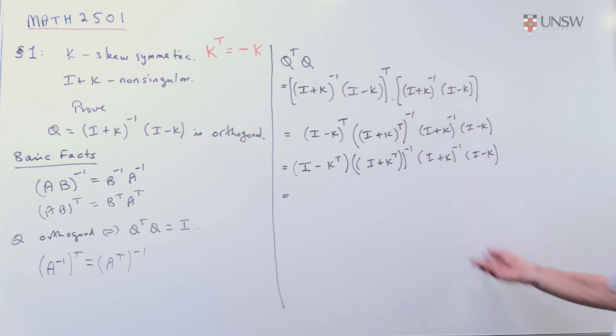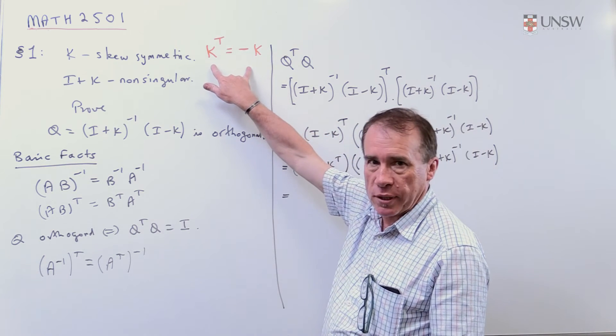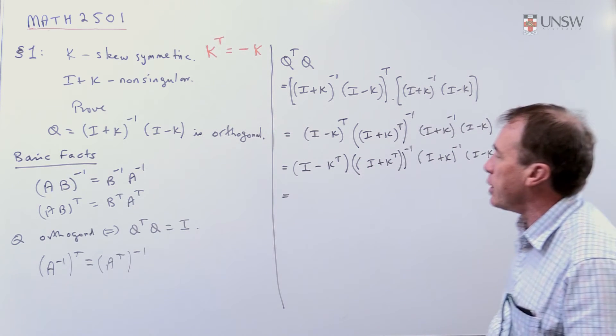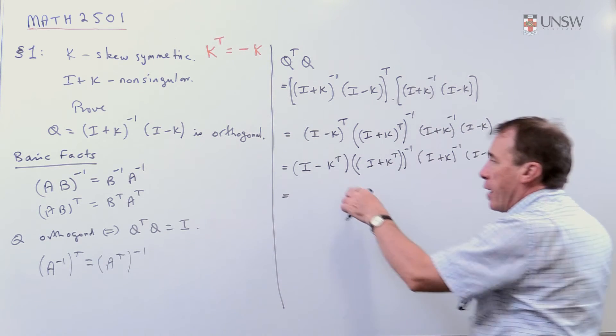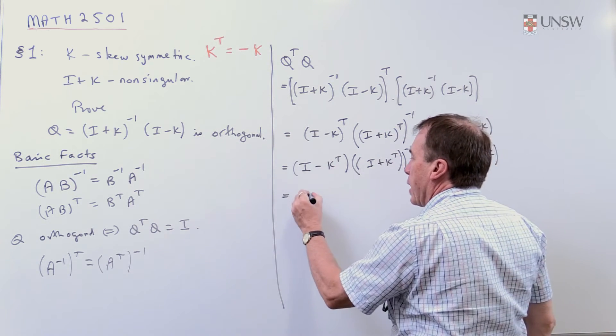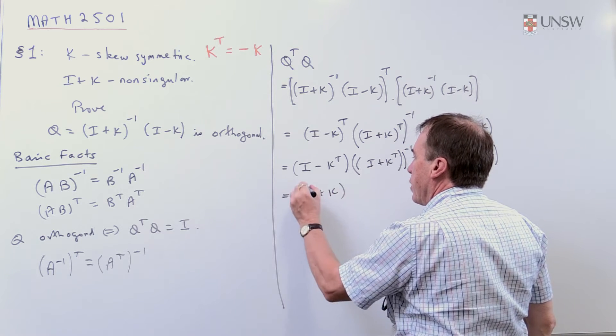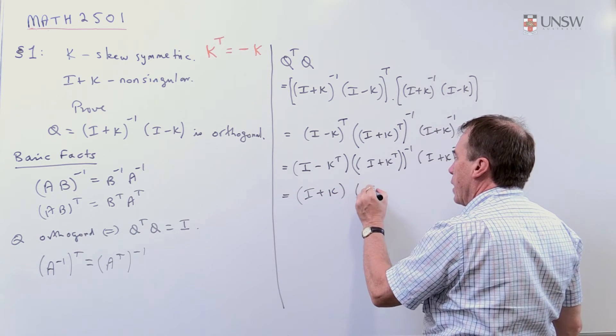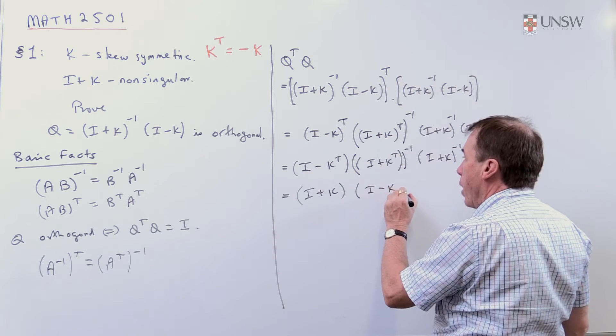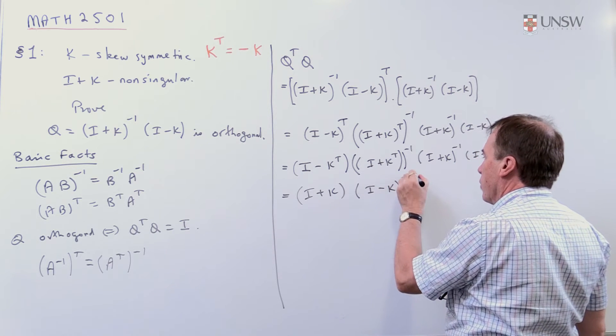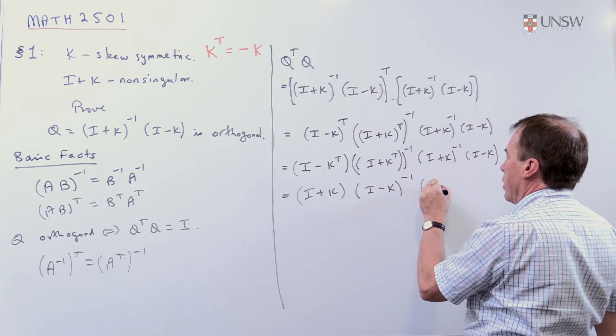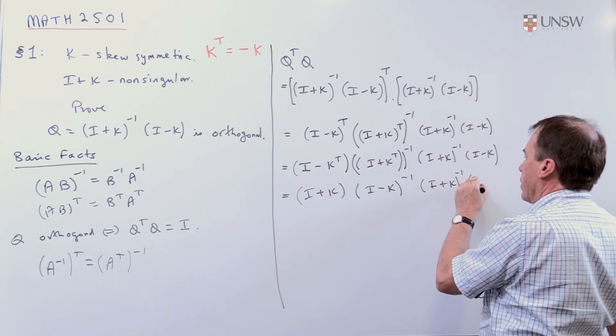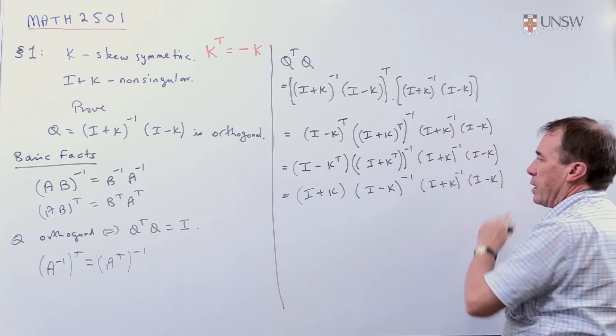Now, at this stage, I need the fact that K is skew symmetric. So, I'm going to go back to that piece of information. It tells me I can replace the K transpose with minus K. So, that simplifies to I plus K, and this simplifies to I minus K. And that's all inverse now, times I plus K inverse times I minus K.